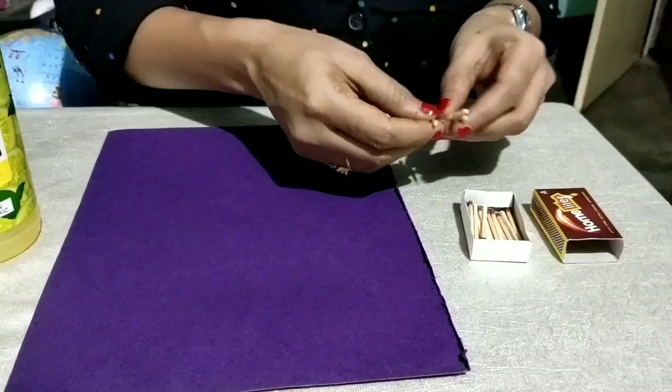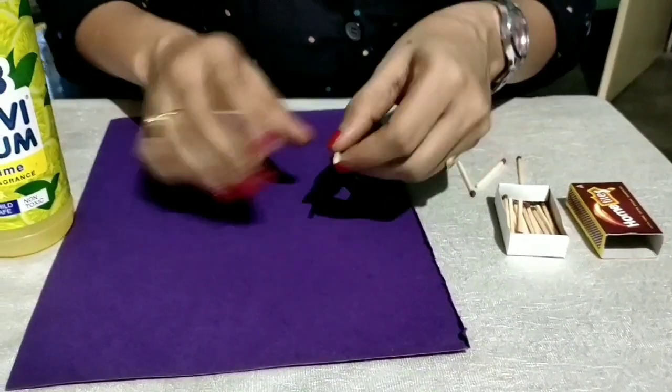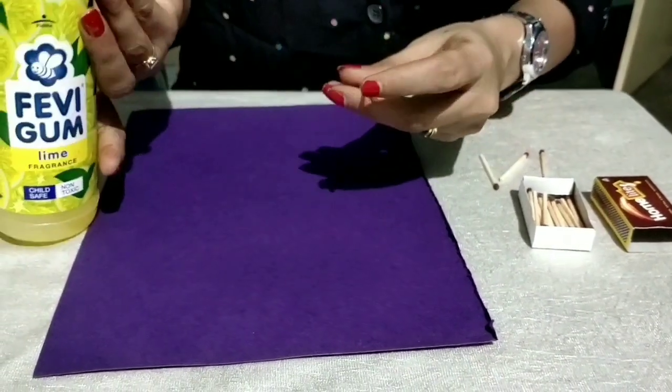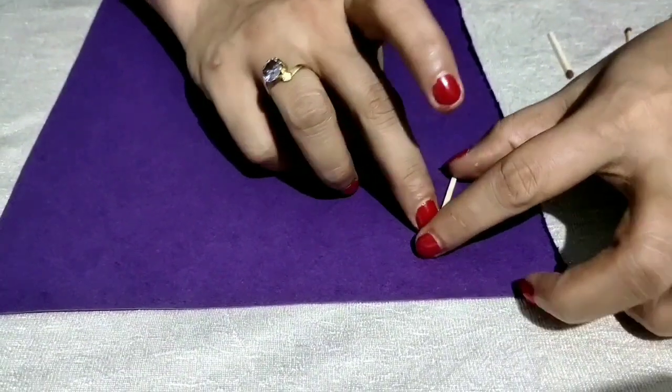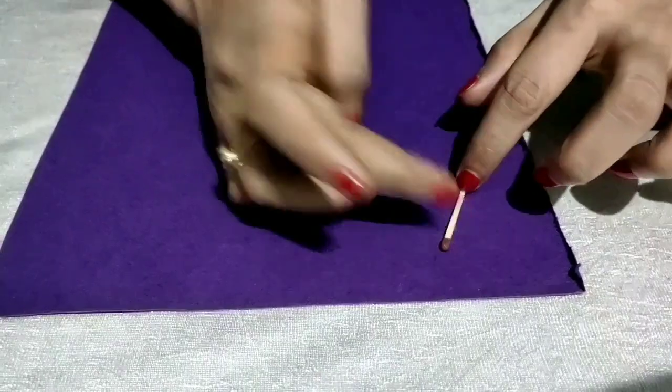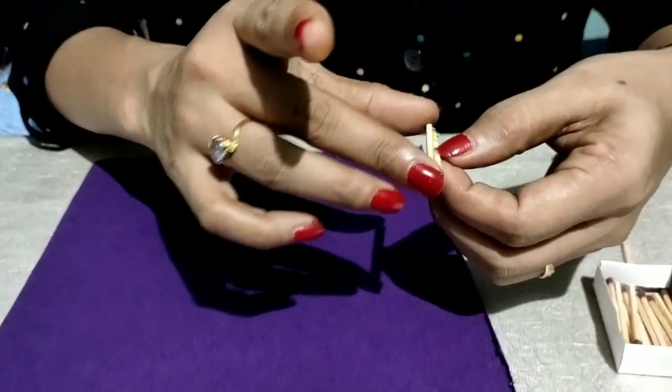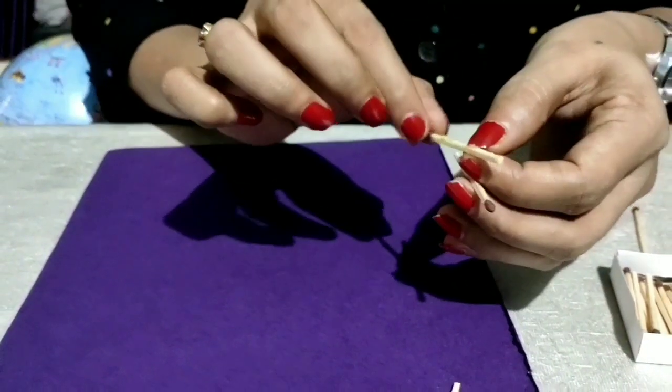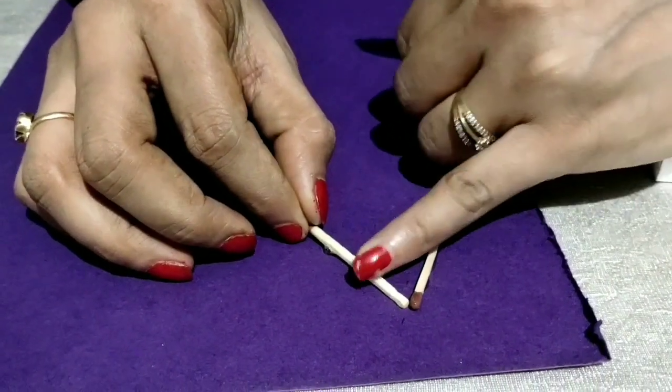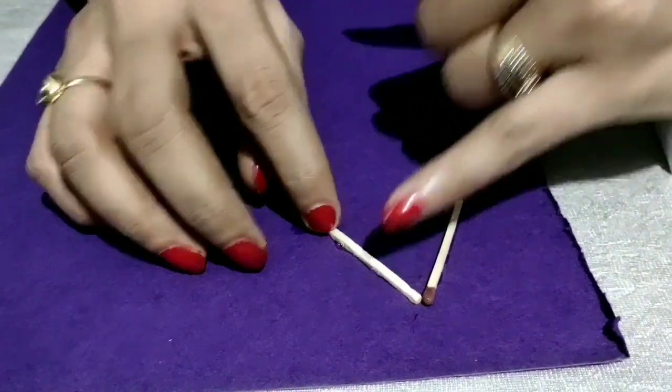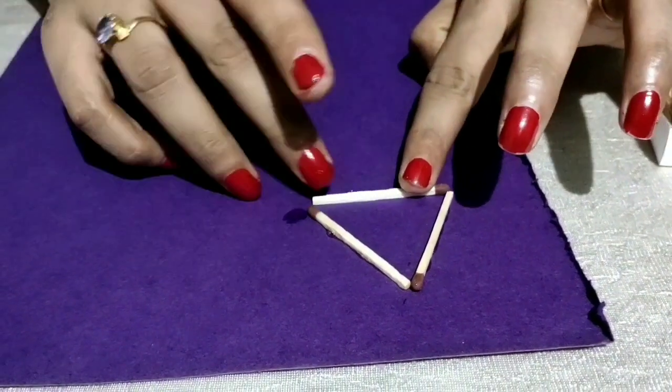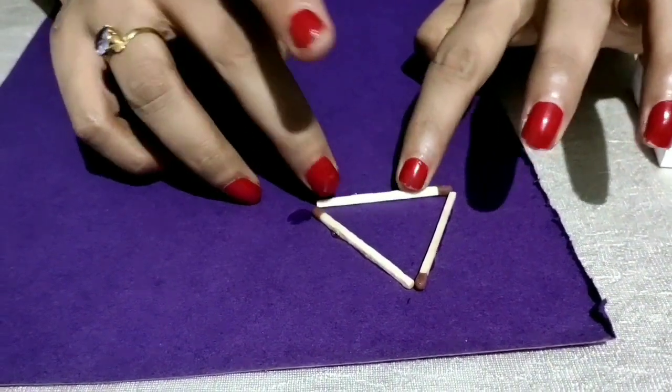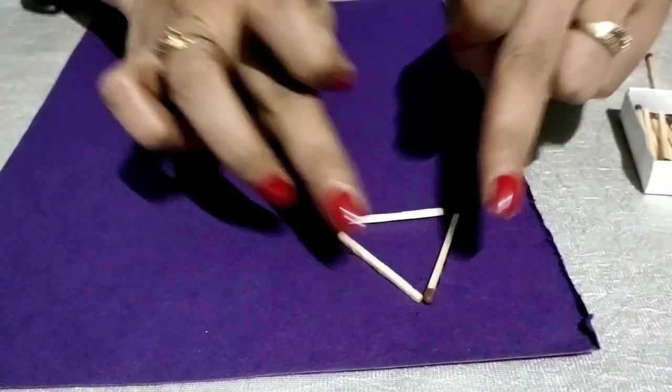Let's make a triangle. For the triangle, paste the matchsticks. Then again we are going to stick it. So this is a triangle.